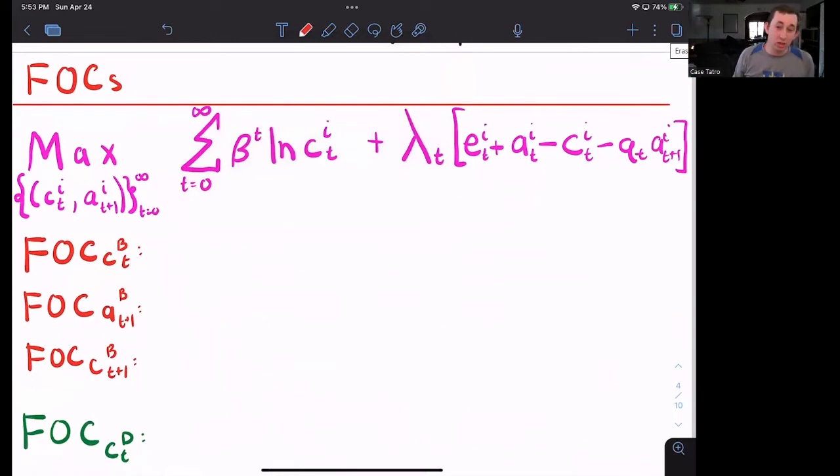That first order condition is going to look very similar to something we've seen before where it's just going to be beta T and the derivative of his utility function is just one over CTB. And that is going to be equal to lambda T because we have a negative lambda T from the budget constraint.